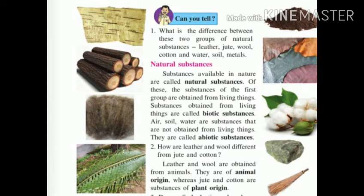Biotic substances include those of animal origin — they are obtained from animals. There are also substances of plant origin. So natural substances are classified as biotic (animal origin and plant origin) and abiotic.